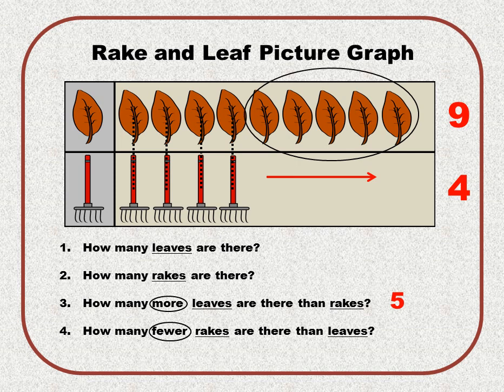Question number four says: how many fewer rakes are there than leaves? Ask yourself how many leaves would you have to take away in order for them to be equal. You would still have to take away those five circled leaves, so there are five fewer rakes than leaves.